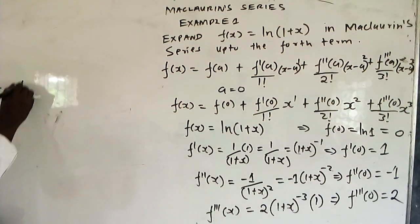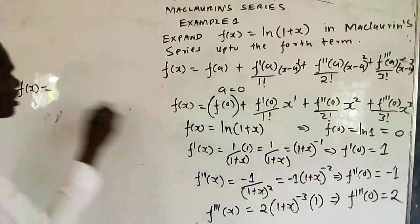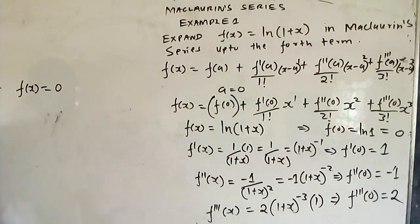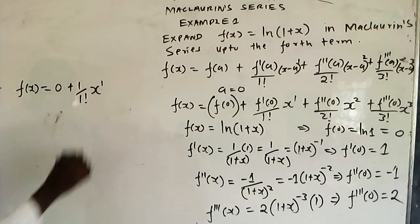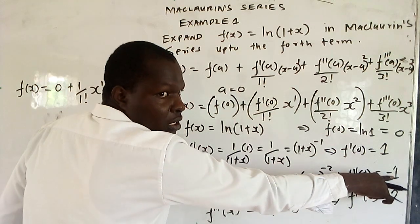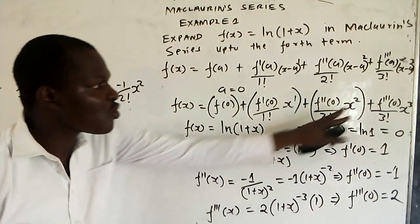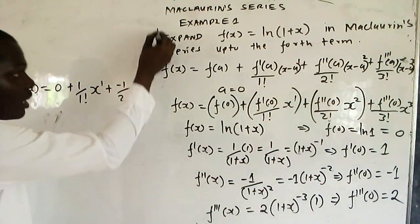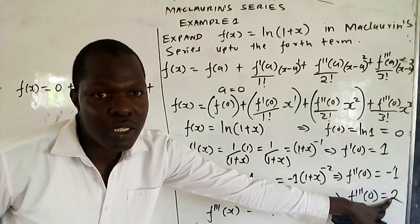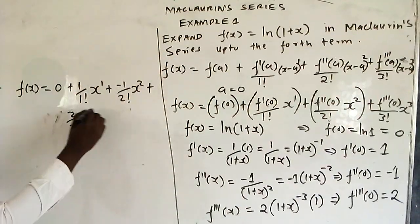Now we substitute into the Maclaurin series. f(0) = 0, so the first term is 0. f'(0) = 1, so the second term is 1 over 1 factorial times x raised to power 1. f''(0) = negative 1, so the third term is negative 1 over 2 factorial times x squared. f'''(0) = 2, so the fourth term is 2 over 3 factorial times x cubed.